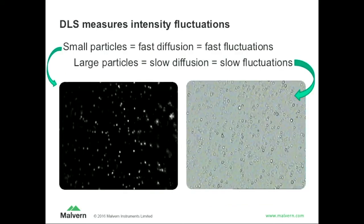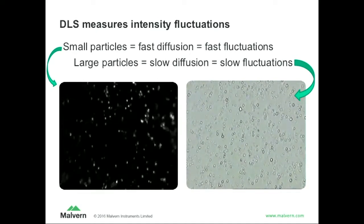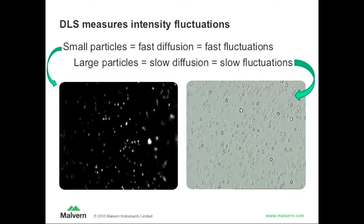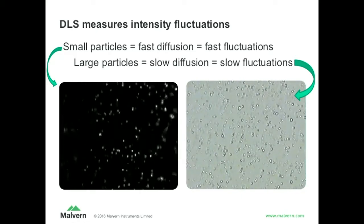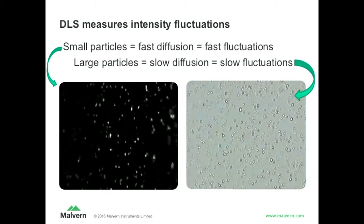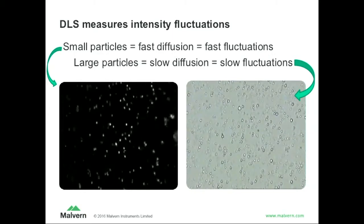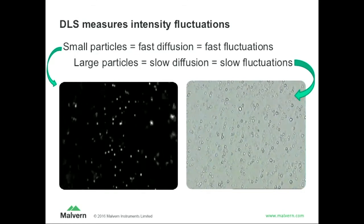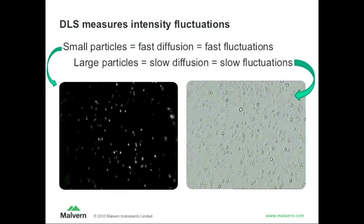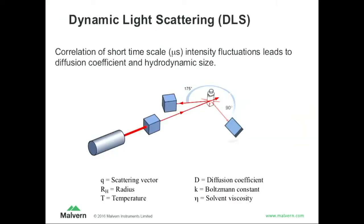But what I actually want to concentrate on here is not measuring them one by one, but looking at the ensemble of them. What you see here on the left is a little video of colloidal gold nanoparticles, and you see them moving very rapidly. On the right, you see a video of milk fat droplets — casein micelles. They're larger and they move more slowly. So if we can somehow characterize this: small particles, fast diffusion, fast fluctuations; or large particles moving more slowly, slower fluctuations — then we're in business. And that's what we do in dynamic light scattering.